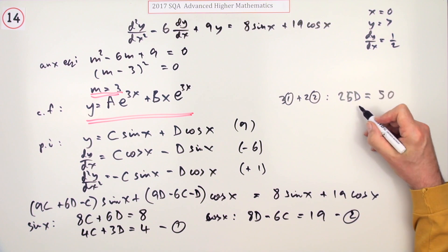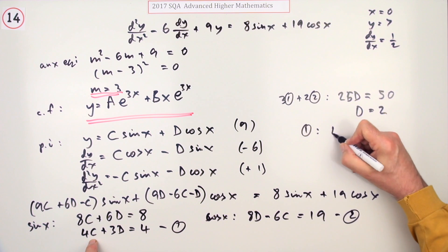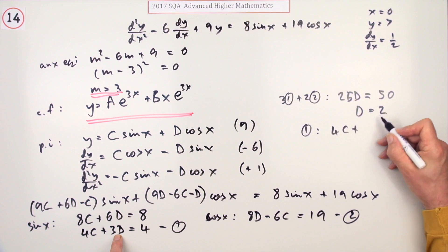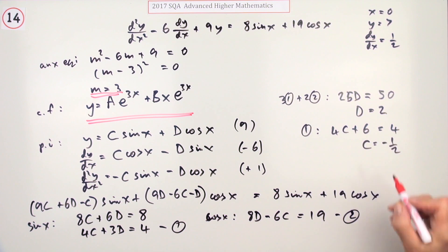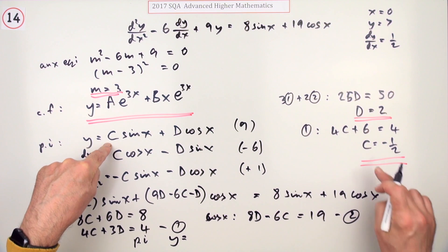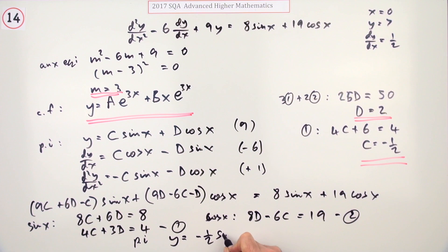25D is 50, so D equals 2. From equation one: 4C plus three times 2, or 6, should equal 4, so 4C equals negative 2, so C equals negative a half. This means for the particular integral, y equals negative a half sine x plus 2 cos x.